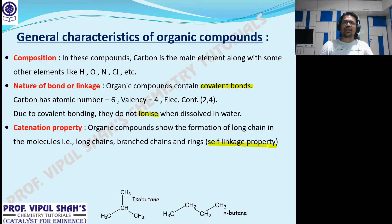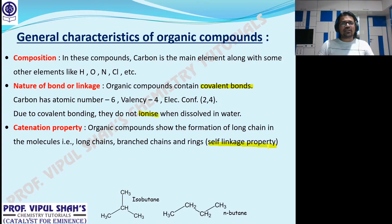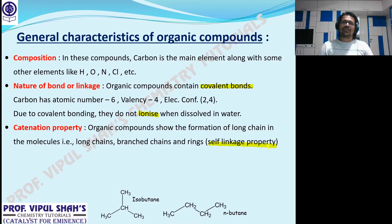Why does carbon show catenation? Do not accept anything without understanding — at competitive examinations, it's knowledge that will help you. Carbon shows catenation — that's a fact. Why does it show catenation? Two reasons: one, because of its small size; and second, the unique strength of carbon-carbon bonds. The C-C single covalent bond is very strong, and carbon's atomic size is small. Due to its smaller size and the unique strength of the C-C bonds, carbon shows catenation.